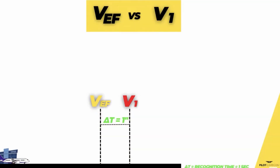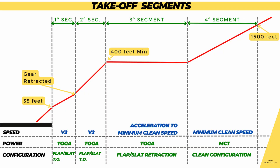The first important thing to remember the day of your interview is that these four take-off segments are based on aircraft performance with an engine failure at the most critical point, and the performance does not take any benefit from ground effect. That's why the first segment starts from a screen height of 35 feet above your take-off surface.